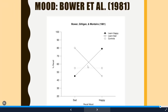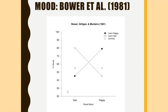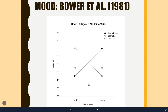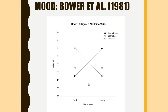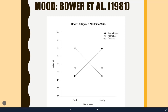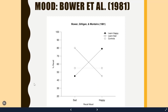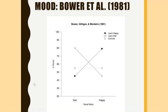Cues can also be mood. Gordon Bower and colleagues had people learn a list of words after being put in a happy or sad mood — achieved by having them read or write about happy or sad situations. They found the same matching effect: if your mood at test matches your mood at study, memory is much better. If there's a mismatch, memory is hurt. So mood can serve as a retrieval cue.